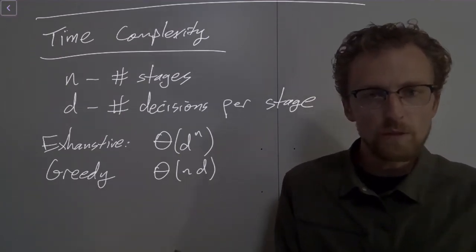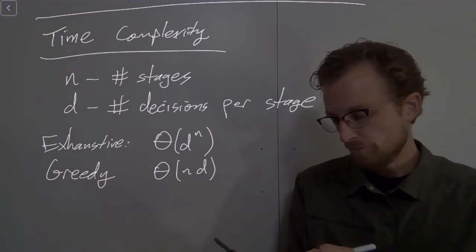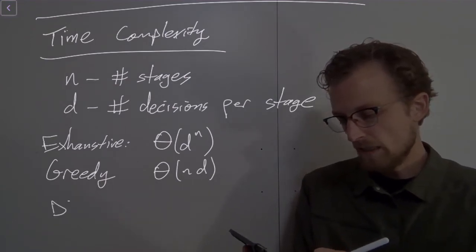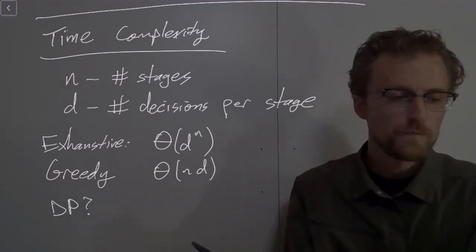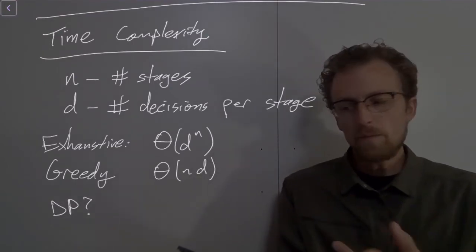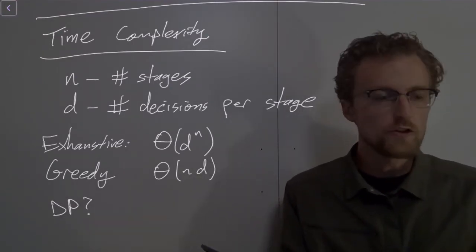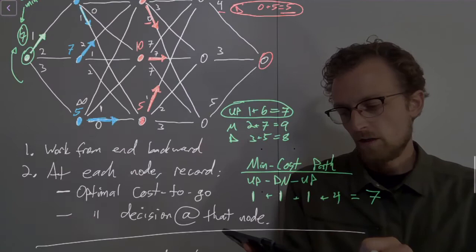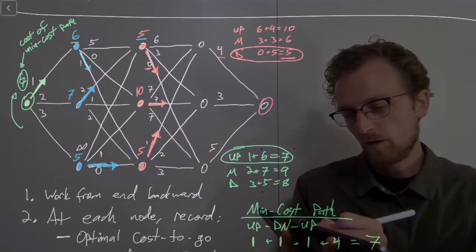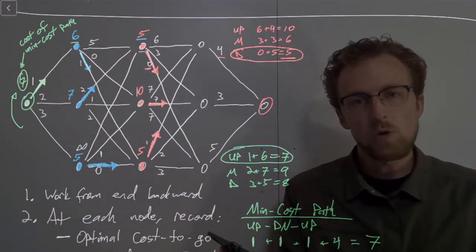So now let's think about what's the complexity of the DP approach. What about the DP approach? Well, let's think about at each node what we had to do. At each node, we had to make d choices.